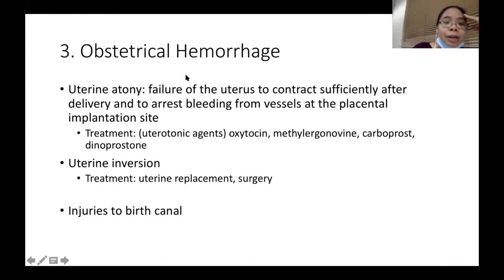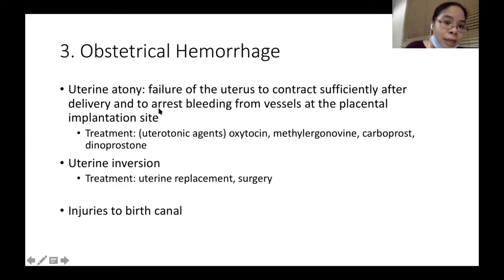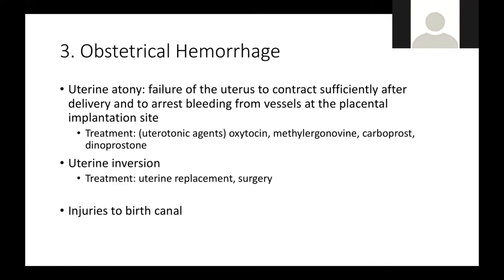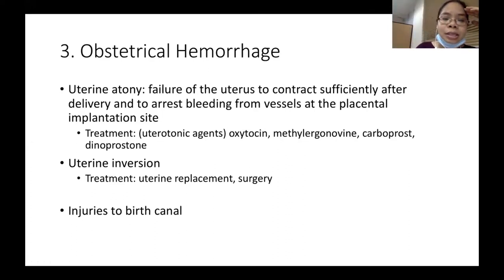The third topic is obstetrical hemorrhage. The first type is uterine atony — the failure of the uterus to contract sufficiently after delivery of the baby. It is one of the most common causes of obstetrical hemorrhage causing death worldwide. You can treat it with uterotonic agents: oxytocin, methylergonovine, carboprost, and dinoprostone.